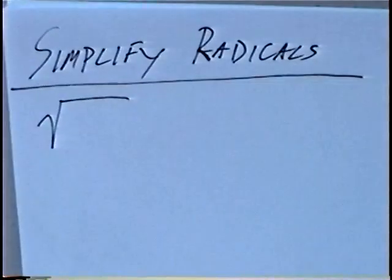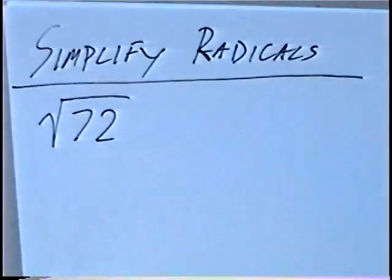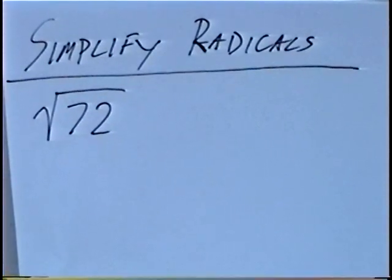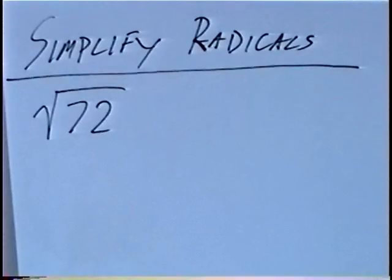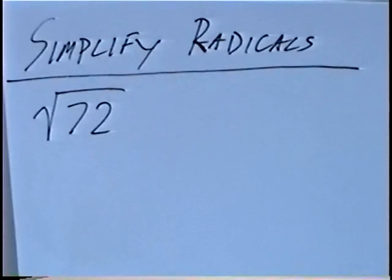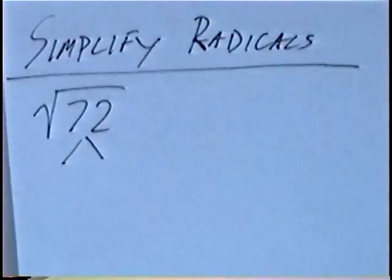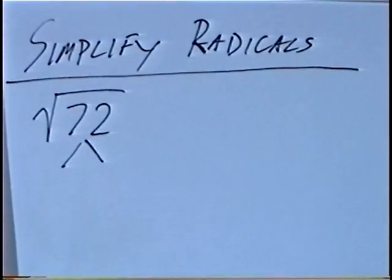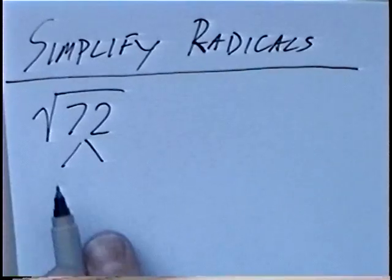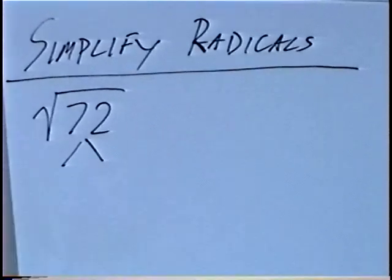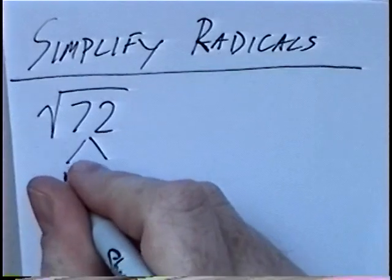The first question is the square root of 72. Taking the square root of 72, there is no single number times itself that equals 72. So we can factor by using a factor tree to find the square root of 72. Two numbers that multiply to get 72 — we could use 9 and 8.